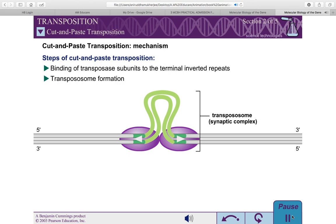This complex functions to ensure that the DNA cleavage and joining reactions occur simultaneously on both ends of the transposon, and also protects the DNA ends from cellular enzymes during transposition.